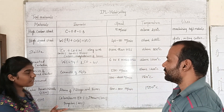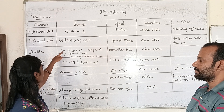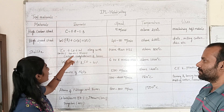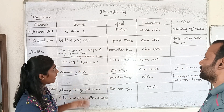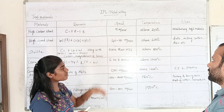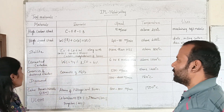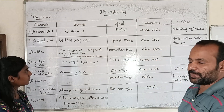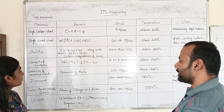This is Stellite. Stellite is a non-ferrous alloy. Chromium is 32 to 35%, cobalt is 42 to 55%, and tungsten is 10 to 20%. There are extra elements of carbon, molybdenum, and boron. The speed is higher, 42 to 50 meters per minute, and the temperature is above 600 degrees Celsius. Stellite contains chromium, cobalt, and tungsten.